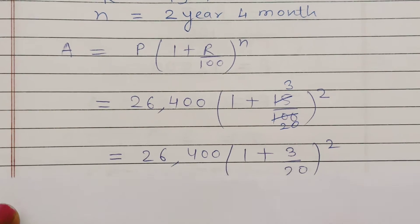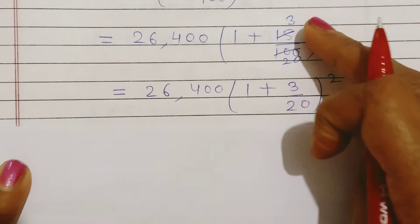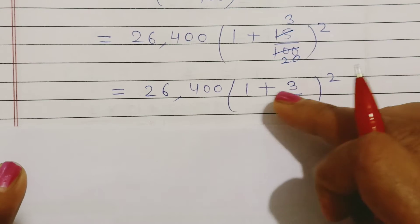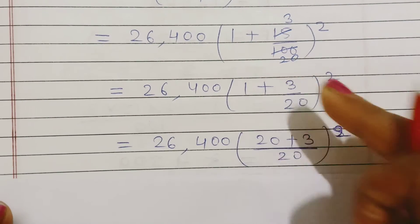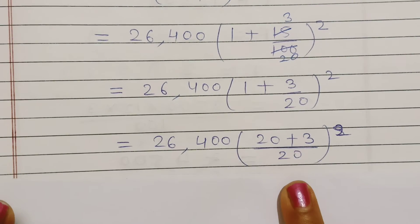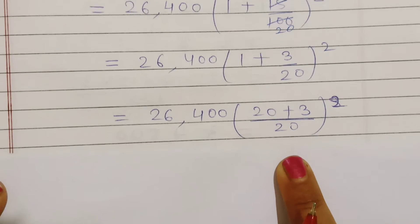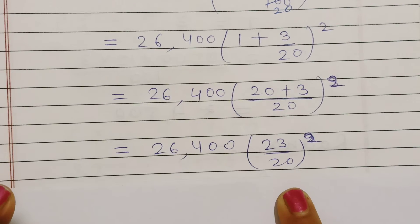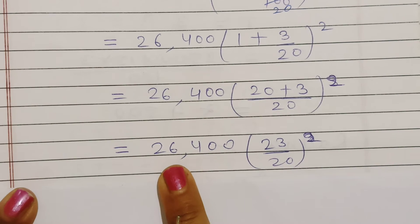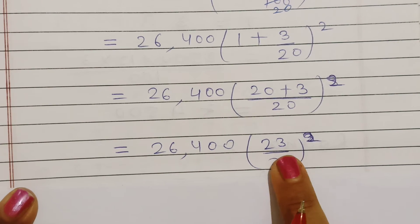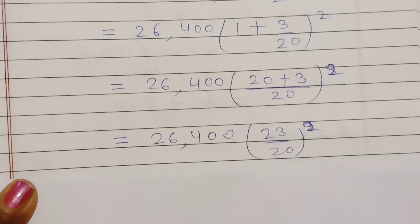फिर 3/20 को 1 में add करेंगे — LCM लेंगे: (20 + 3)/20 = 23/20। तो expression बनता है (23/20)^2। Power 2 है, तो इसको 2 times लिखेंगे: 23/20 × 23/20।